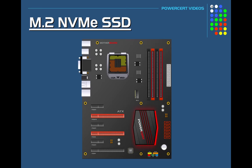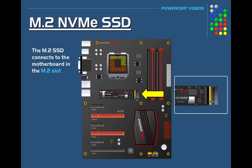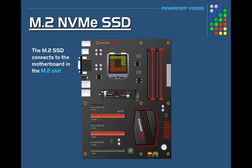The M.2 SSD connects to the motherboard in the M.2 slot. It slides into the spring-loaded slot and is tightened down with a single screw. There are no other connections to be made — no connection cable or separate power cable — so it's just like installing an expansion card.